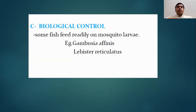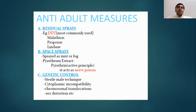Biological control of larvae uses fish that specifically feed on mosquito larvae, like Gambusia affinis and Lebistes reticulatus. These fish feed on the larvae and pupae of mosquitoes, reducing or eliminating larvae in water collections. Anti-adult measures include residual sprays — DDT most commonly used, malathion, propoxur, and lindane — and space sprays like pyrethrum extract and pyrethrin, which is the active principle and acts as a nerve poison. Genetic control of adults can be done by releasing sterile males into the wild, through cytoplasmic incompatibility, chromosomal translocation, and sex distortion.